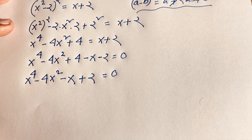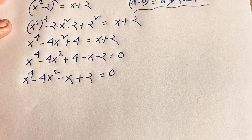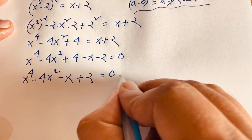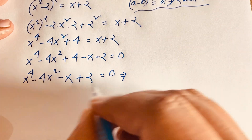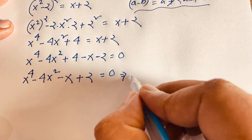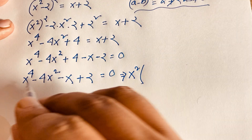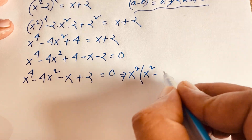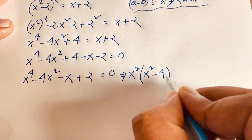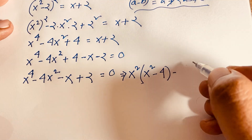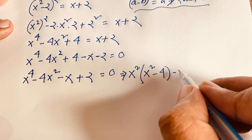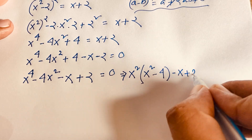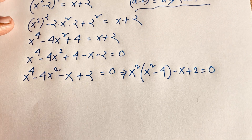Now in this expression, x² is common. So we take x² as a common factor: x²(x² - 4) - (x + 2) = 0, then factoring further we get x²(x² - 4) - (x + 2) = 0.